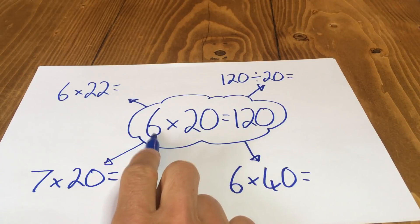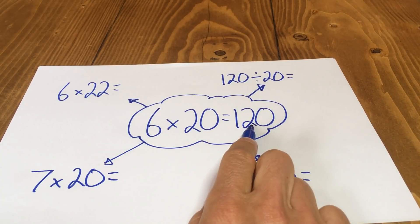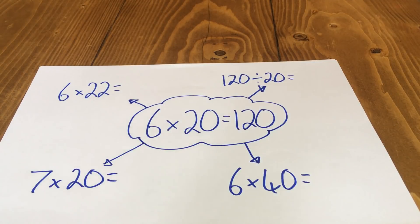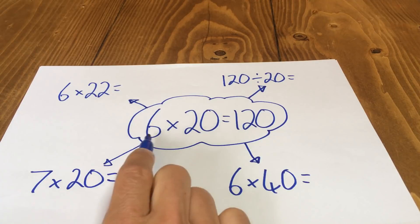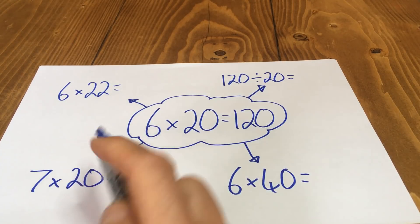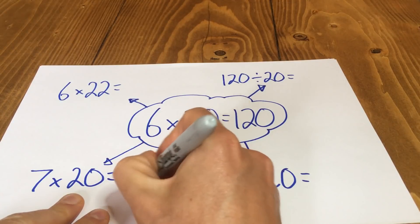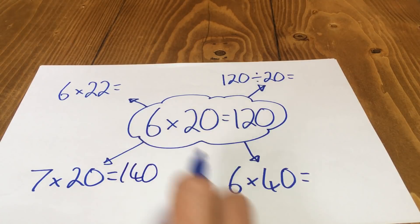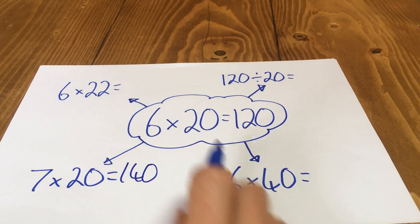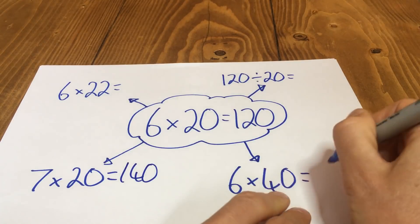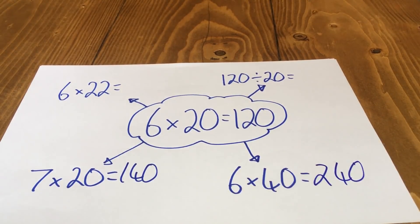So this is the fact that we're given: 6 multiplied by 20 equals 120. So how can I use this to work out these other number facts here? I'm going to do this one as an example and then give you one to have a go at. So 6 times 20 is 120. 7 lots of 20, well that is one more lot of 20. So 140 there. Now 6 times 20, 6 times 40, well what's the same? It's 6 multiplied by. And what's different? We've got double the amount here, 20, 40. So it must be 240, double 120.